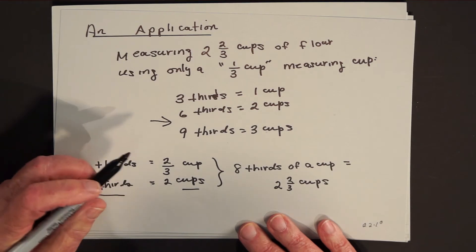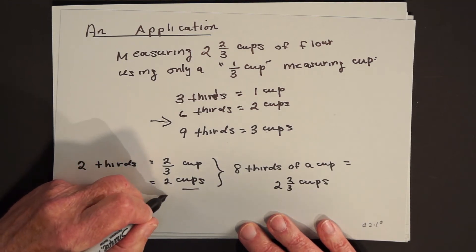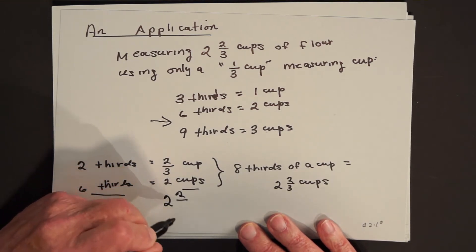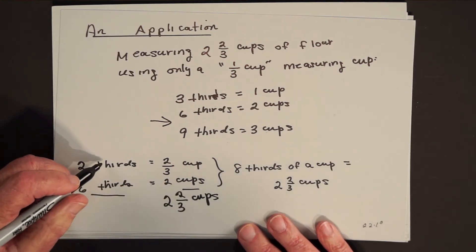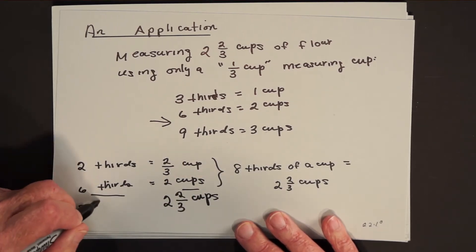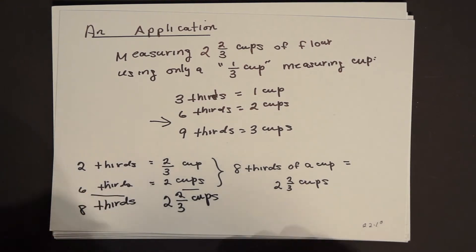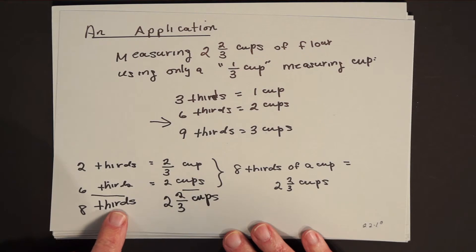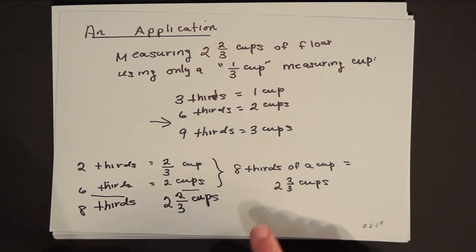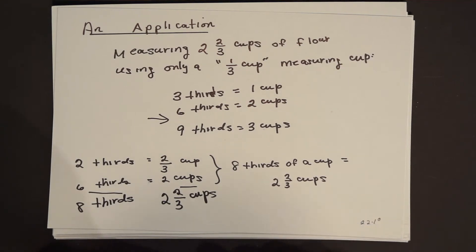So now if I add over here, if the language is cups, the answer is two and two thirds cups. But if the noun is thirds, the answer is eight thirds. So in other words, what I have to do is fill up the one third of a measuring cup eight times to get two and two thirds of a cup. Eight thirds of a cup is two and two thirds cups.